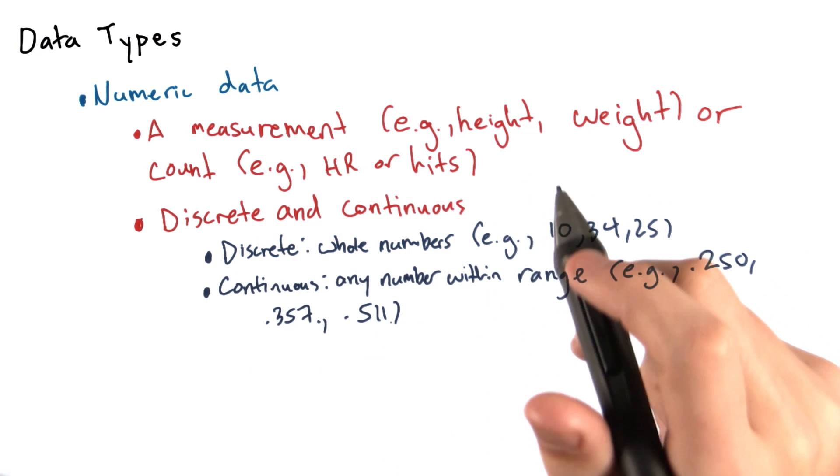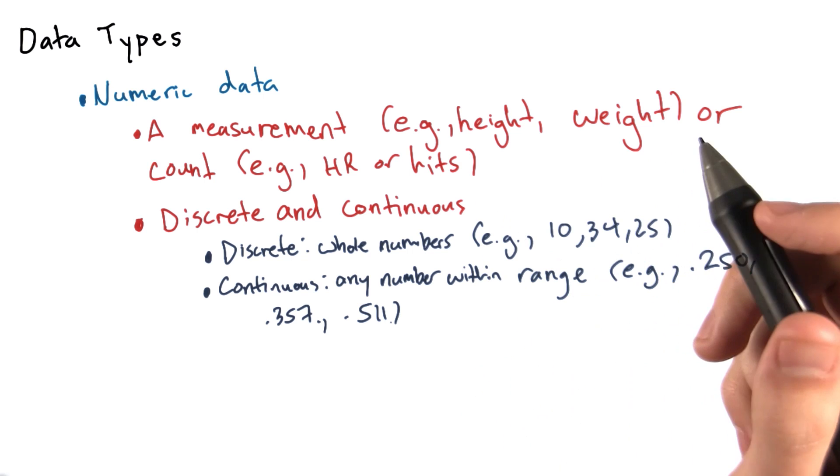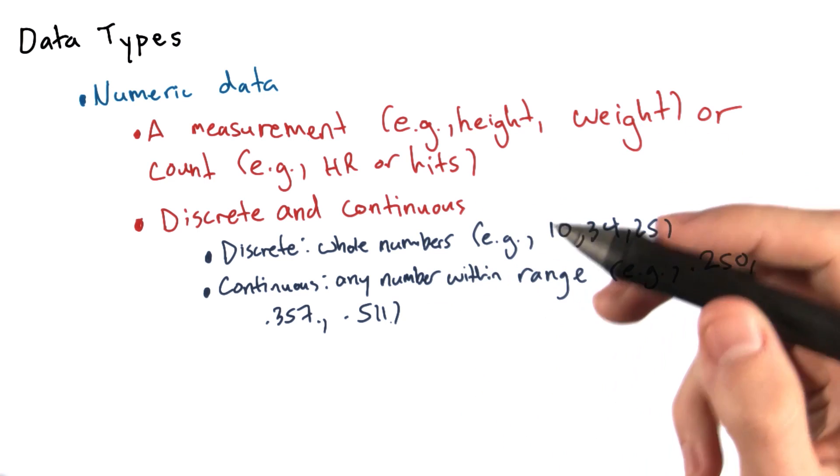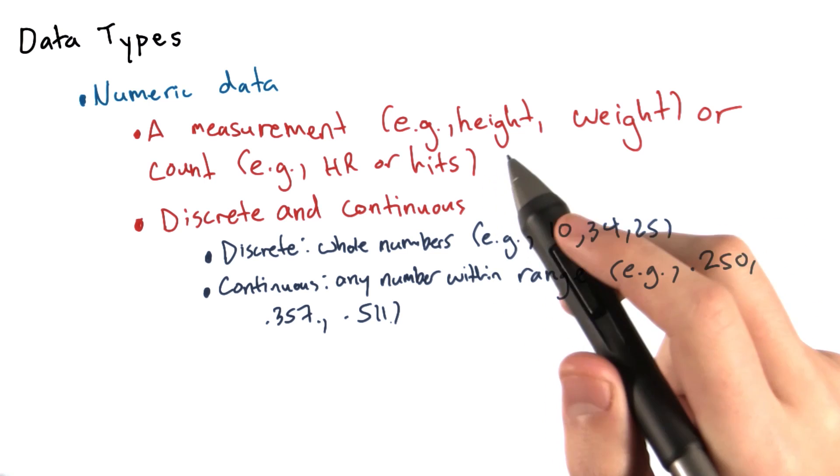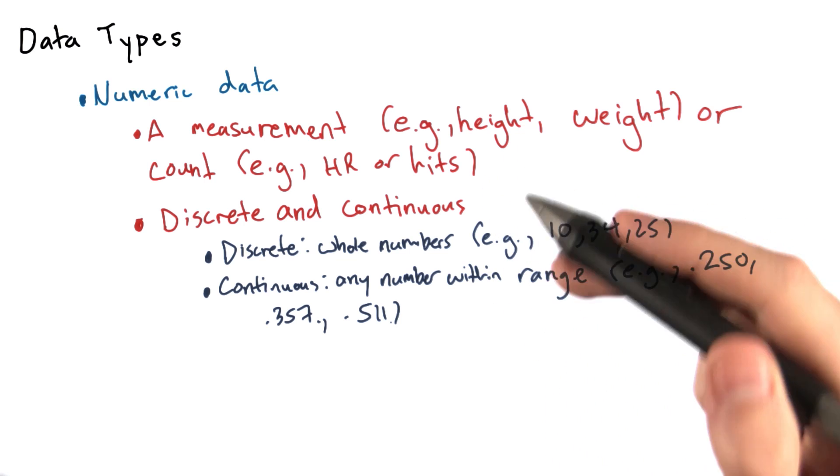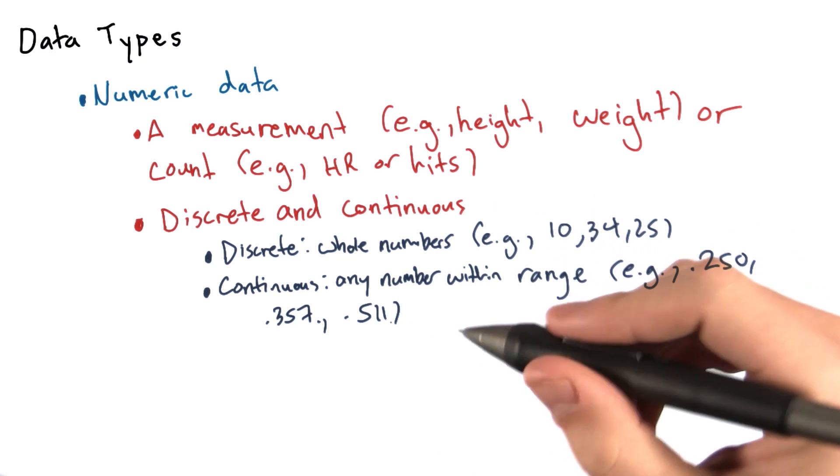And so again, just to hammer this home, examples of numeric data might be a baseball player's height or weight, or their number of home runs, or number of hits, or number of doubles. The takeaway here is that this is data that are numbers, and they are not ordered in time. They're just numbers that we've collected.